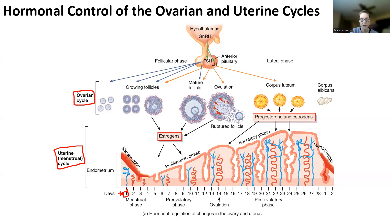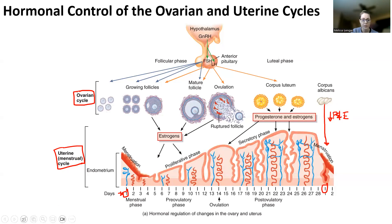We're going to start at day one. Day one is the first day of menstruation — the first day of a woman's period. At day one, we're going to see the corpus albicans being created, and we're going to see a decrease in progesterone and a decrease in estrogen. That's where I'm going to end and also where I'm going to start at the same time. I'll use abbreviations to keep the video from being 30 minutes long.